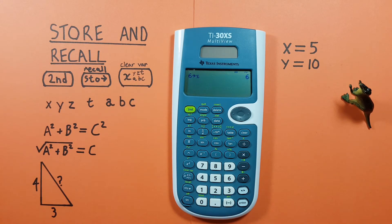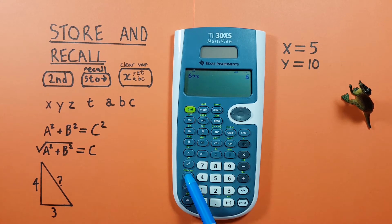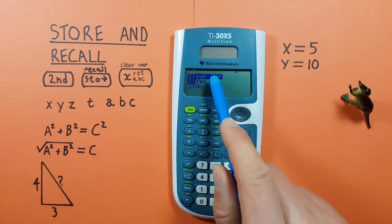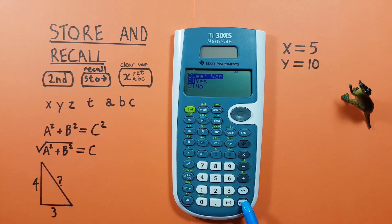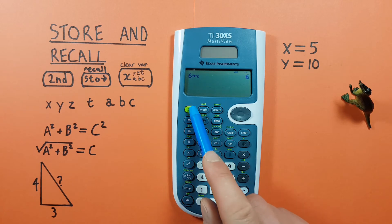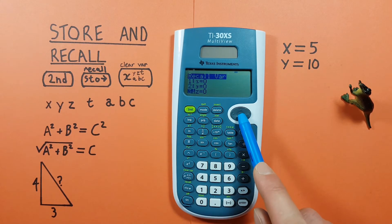If we want to clear all our variables, you can use the second function of the memory slot key. By pressing 2nd, and then the memory slot key brings us to the clear variable menu. Number 1 is yes, so we press enter, and now when we look at our recall menu, we see 0s for all our variables.